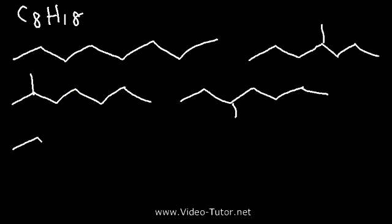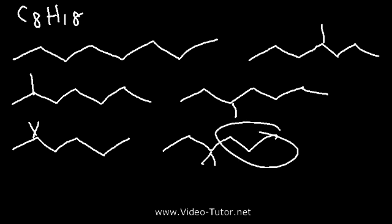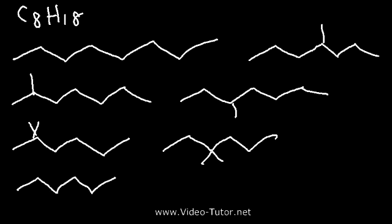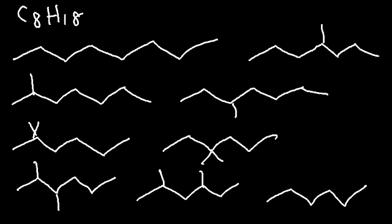Going down to a six carbon chain, we need to add two methyl groups. We can add two methyl groups on carbon 2 or two on carbon 3 — we can't place them on the right side, it would be the same as the left. Then with one methyl on carbon 2 and one on carbon 3, or one on carbon 2 and one on 4, or one on carbon 2 and one on 5, and also one on carbon 3 and one on 4.